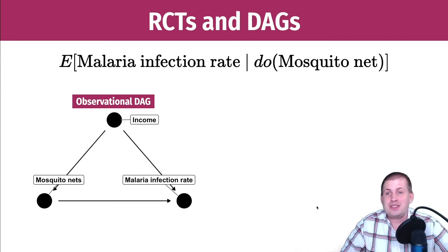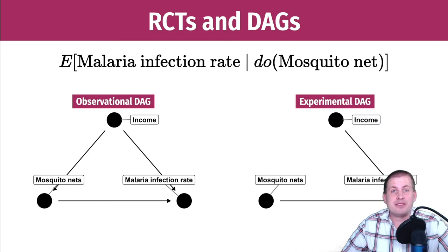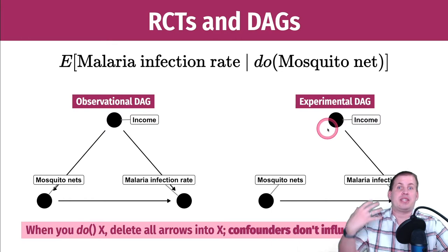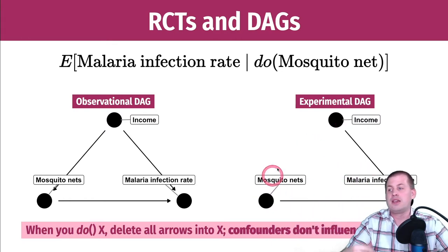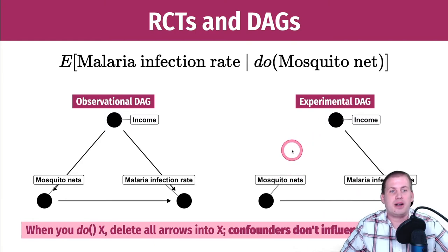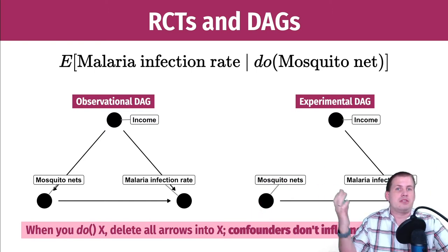If you can randomize this and have a randomized control trial for mosquito nets, what that lets you do with the DAG is cut all of the arrows that lead into your treatment node. All you're left with is the effect of mosquito nets on malaria infection rate, and magically all of the confounding goes away. You can just measure the effect directly of mosquito nets on infection rate, because the confounders no longer influence treatment. All that confounding is gone, and the whole effect you find is just the direct effect of mosquito nets on infection rate — which is ultimately that one arrow.